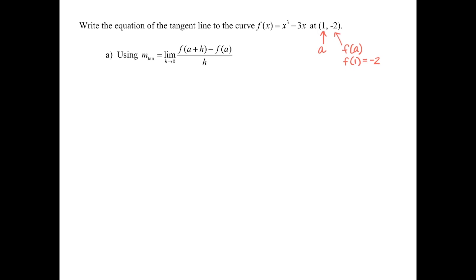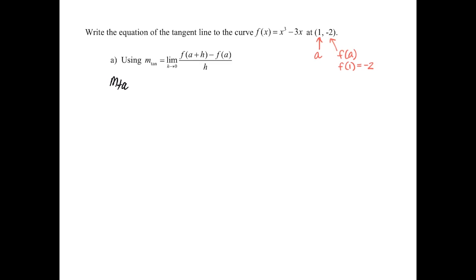The slope of our tangent will be equal to the limit as h approaches 0 of f(1+h) minus f(1), all divided by h. That's our setup, allowing a to equal 1.